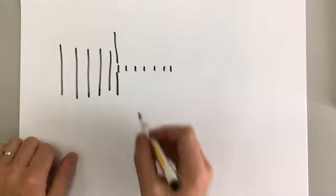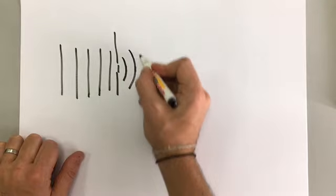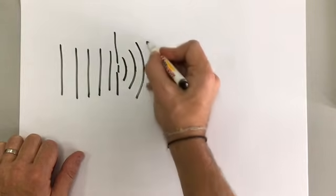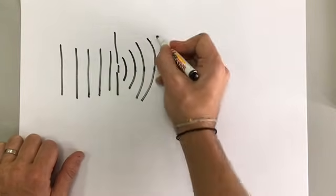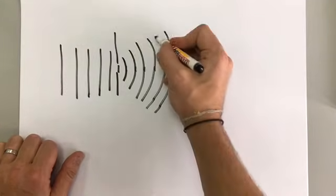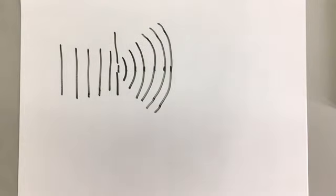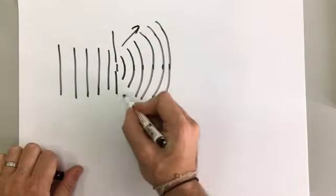If you did this with water, for example, you would notice that after it came through the gap, it spread out like this, and the waves gradually getting wider and wider and wider. This is called diffraction. The spreading out of the waves is called diffraction.